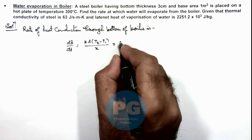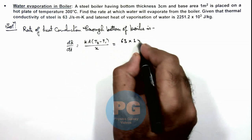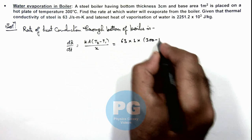So here we can write k is 63 multiplied by area is 1 meter square, multiplied by 300 minus hundred.